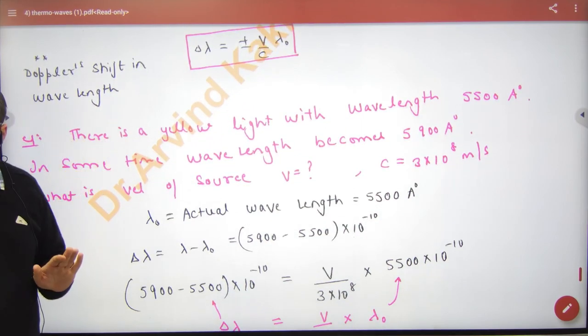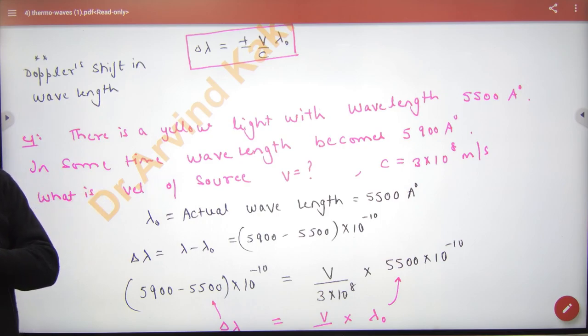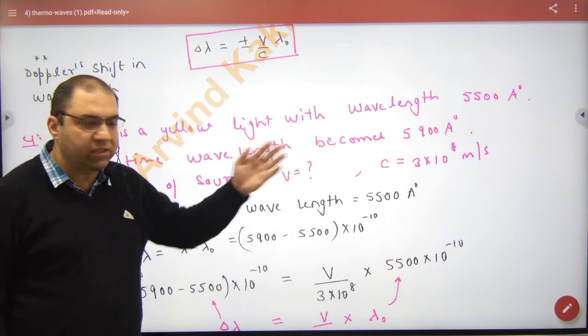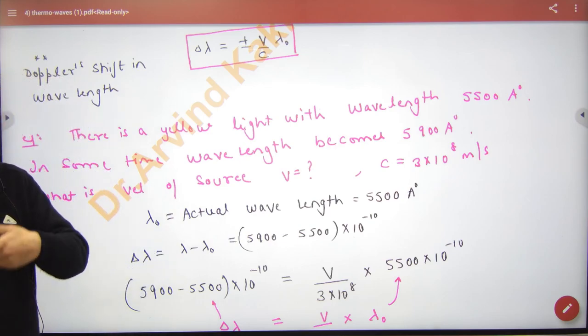There is a yellow light. It's 5500 angstrom. It's an actual wavelength. And after a while, the wavelength is 5900 angstrom. So lambda changed. Lambda has increased.